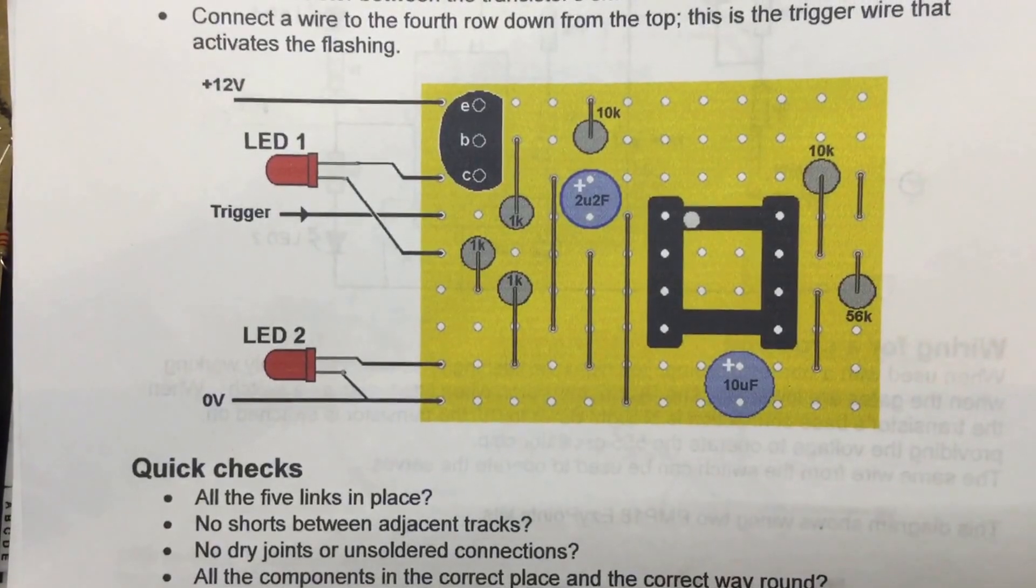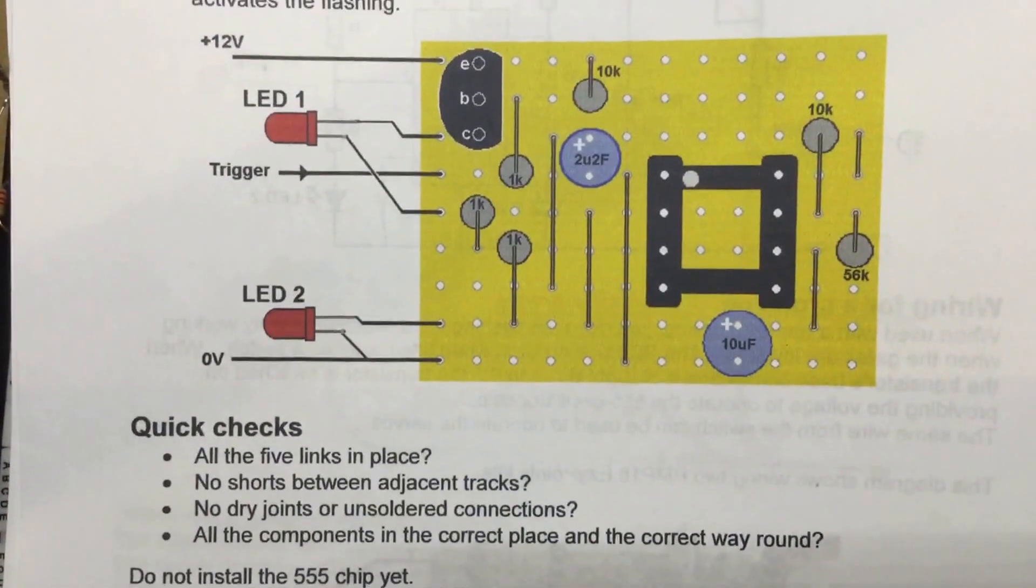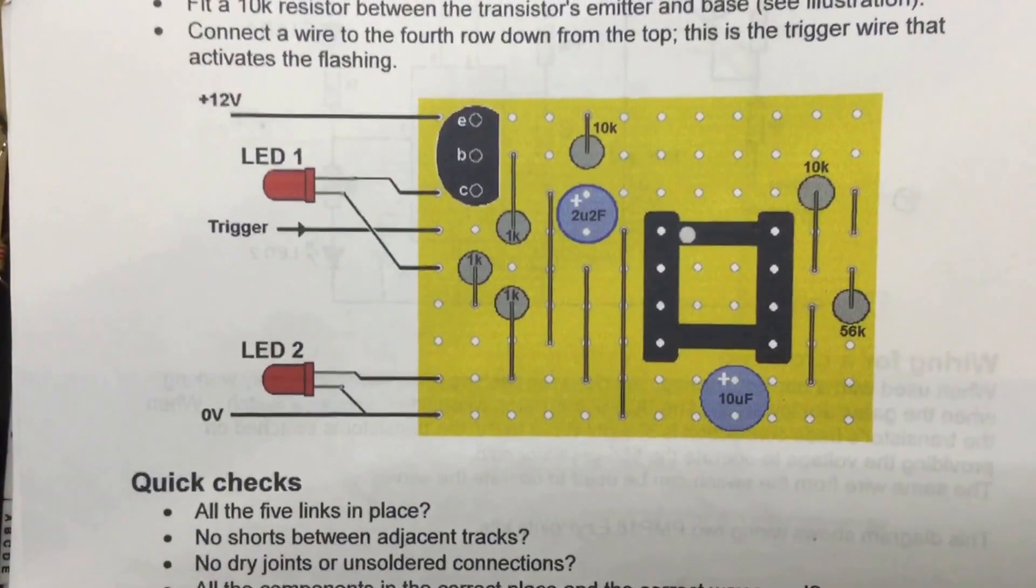Okay, what we're looking at here is one of Davey Dick's MERG pocket money projects. It's the PMP 21, and it's a dual LED flasher. It has the optional transistor up there in the left-hand corner.